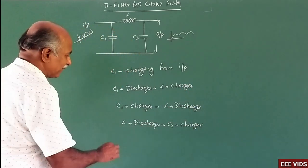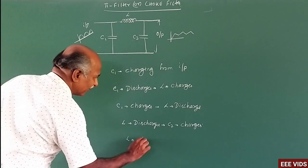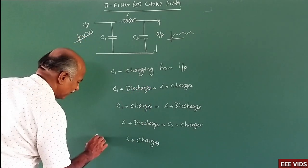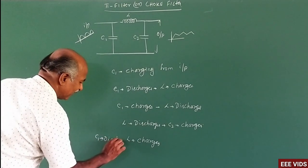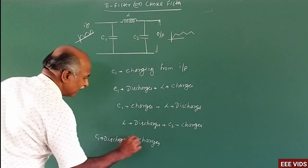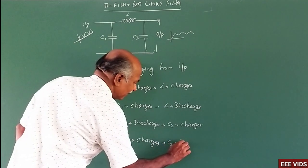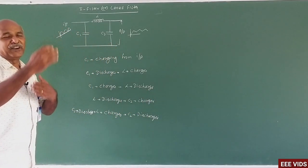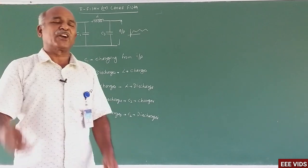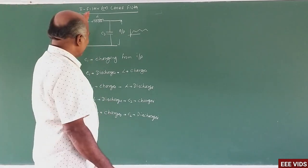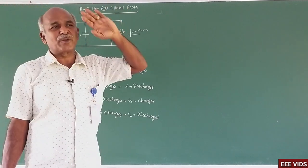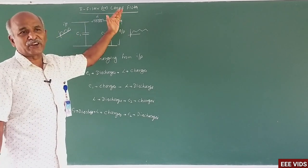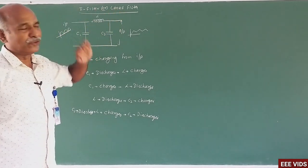L charges again, then C1 discharges and L charges, and then C2 discharges. This is the working concept of the pi filter. As the filter operates, the output becomes more like perfect DC. In the inductor L, AC components are blocked, and in capacitor C1, AC is directed to ground so that only DC passes through.